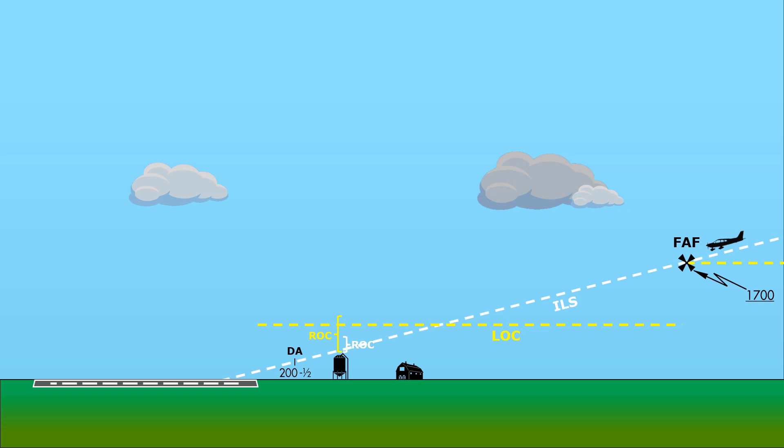For the LOC, that'll mean raising the MDA. Aircraft shooting the localizer approach will level off at a higher altitude and maintain that, which will meet the required clearance above the now taller silo until able to proceed to the runway visually.